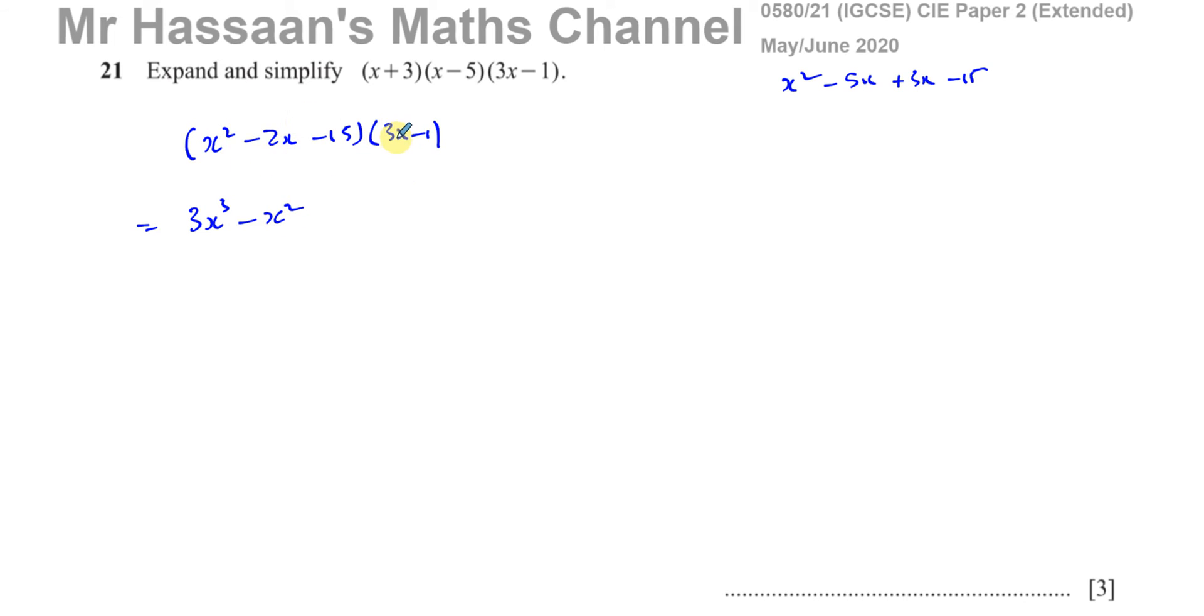Now the minus 2x times this bracket. So minus 2x times 3x, which is minus 6x squared. Minus 2x times minus 1, which is plus 2x. Minus 15 times 3x, which is minus 45x. And then minus 15 times minus 1, which is plus 15.